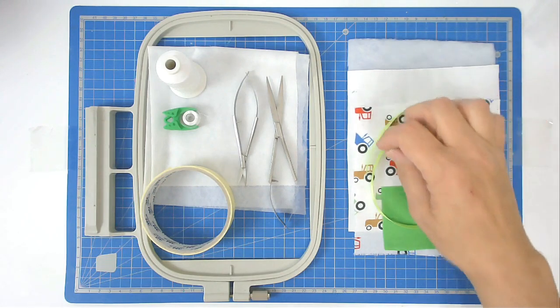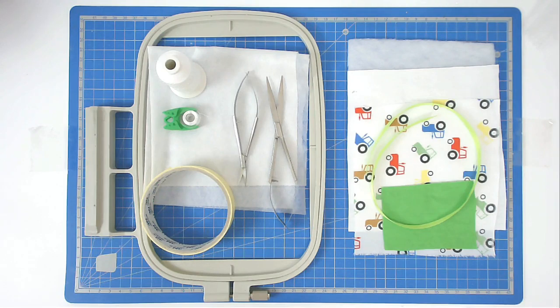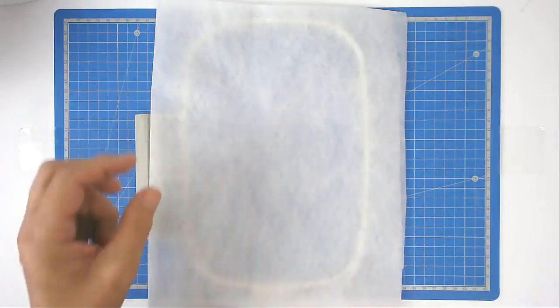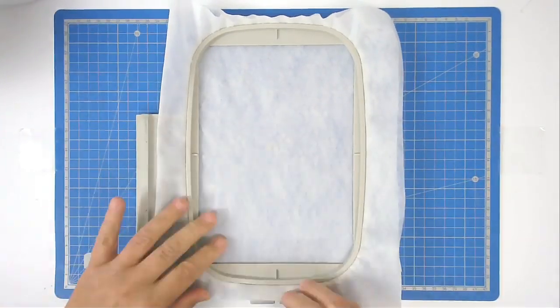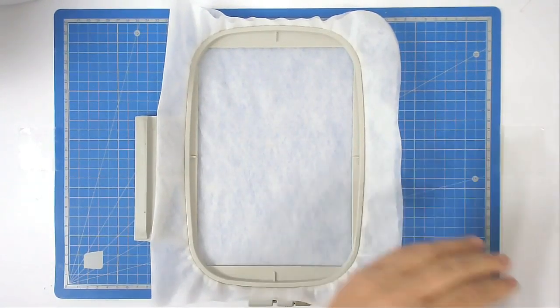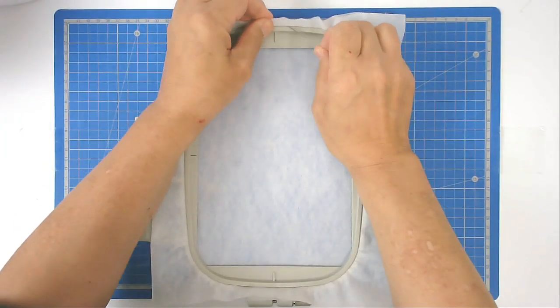Hoop your wash away stabilizer, and I'm going to pin around the edge. That helps to keep it taut in the hoop and stops it pulling down between the two hoop pieces.